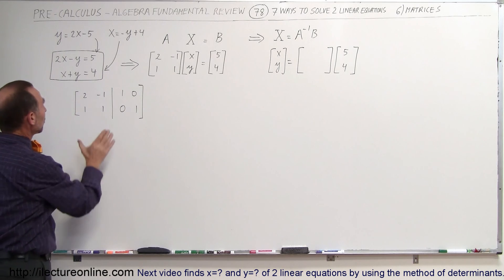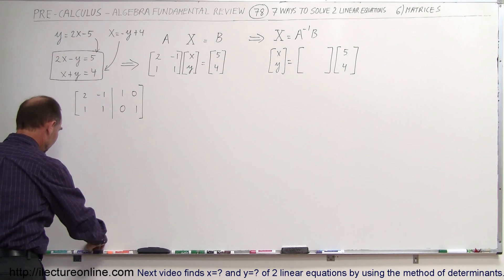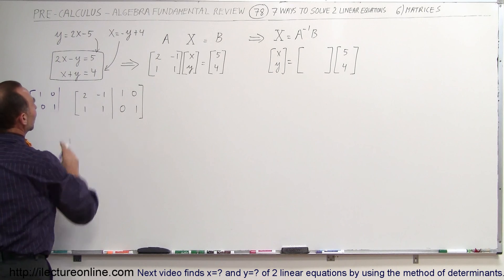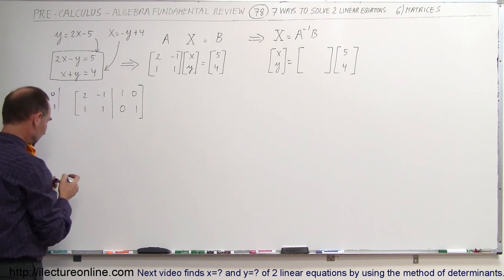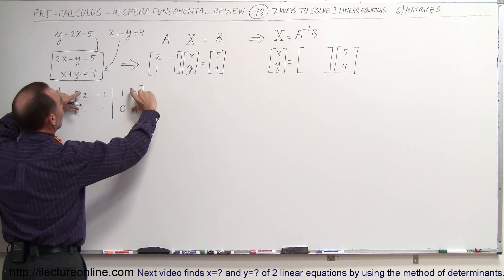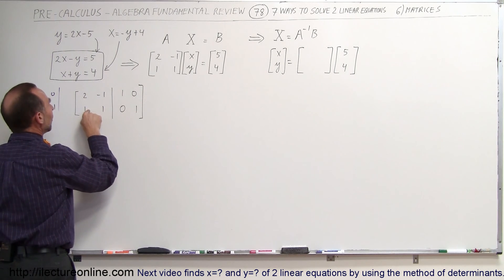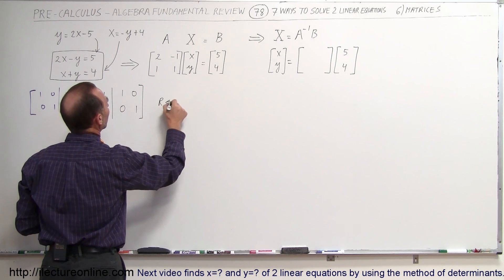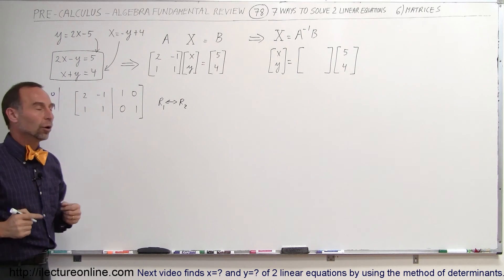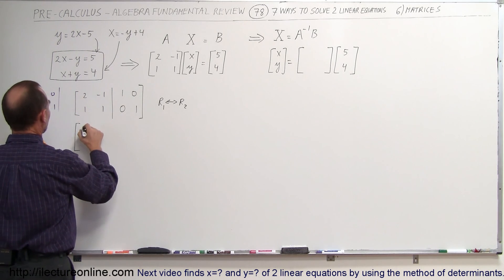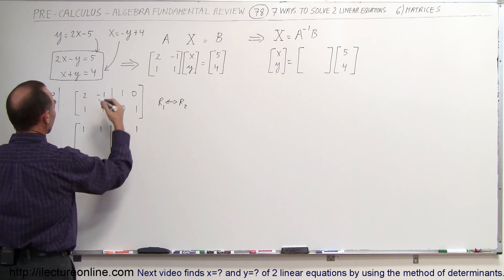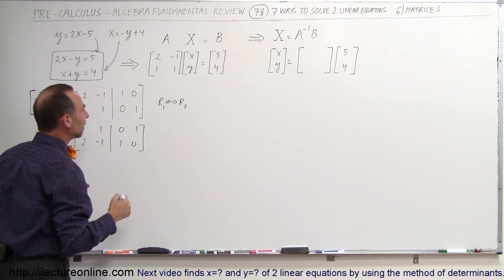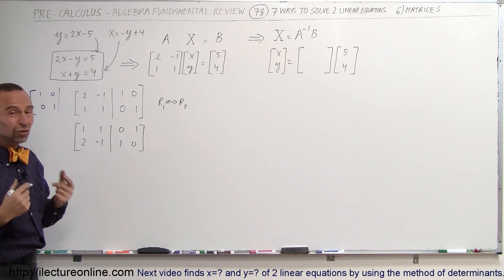We want the left side to become the identity matrix. To get a 1 in the upper left corner, our first operation is to interchange rows R1 and R2. After swapping, the top row becomes 1, 1, 0, 1, and the bottom row becomes 2, negative 1, 1, 0. Now we have a 1 in the upper left corner, which is what we want.